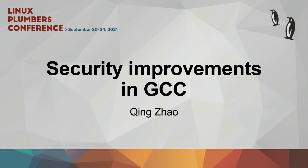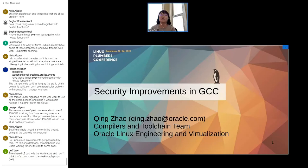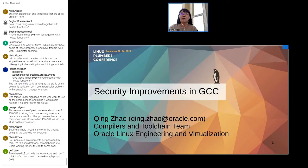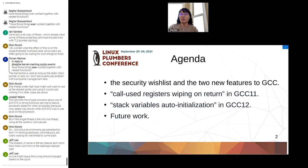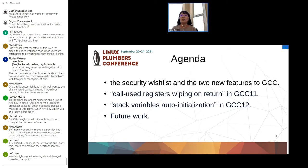Hi, my name is Qin. My talk today is on security improvements in GCC. I will start from the security wish list that was requested for the Linux kernel for a long time. We chose two important security features to implement and add into the latest GCC. The first is core-used registers wiping on return, added to GCC 11. The second is stack variable auto initialization, added to GCC 12 recently.